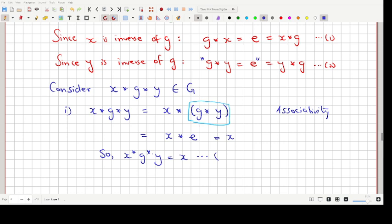So what do we get? We get X star G star Y is equal to X. Let us name this equation 3 and maybe we can put a box around it because we are going to need this in a while.